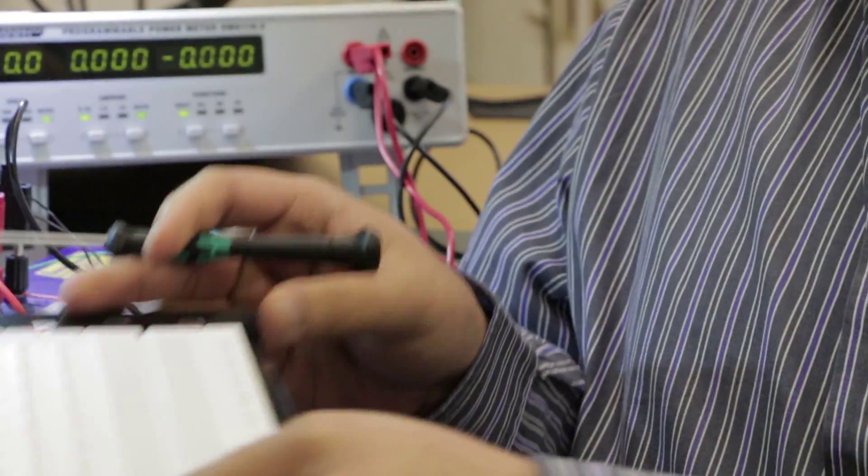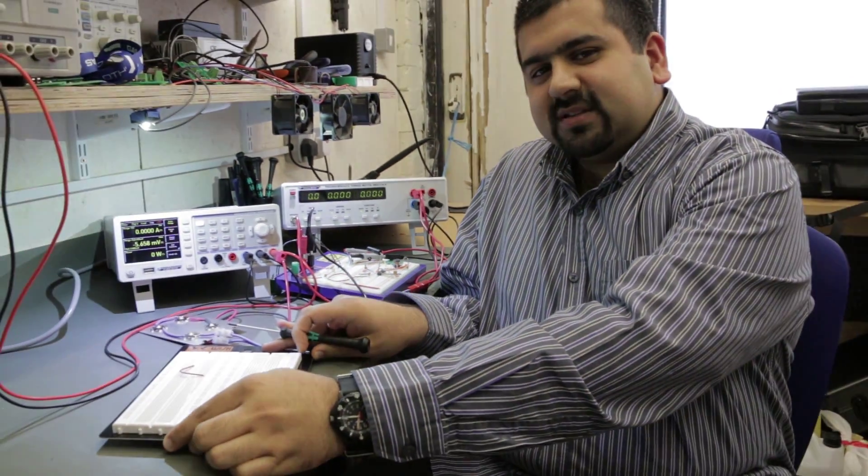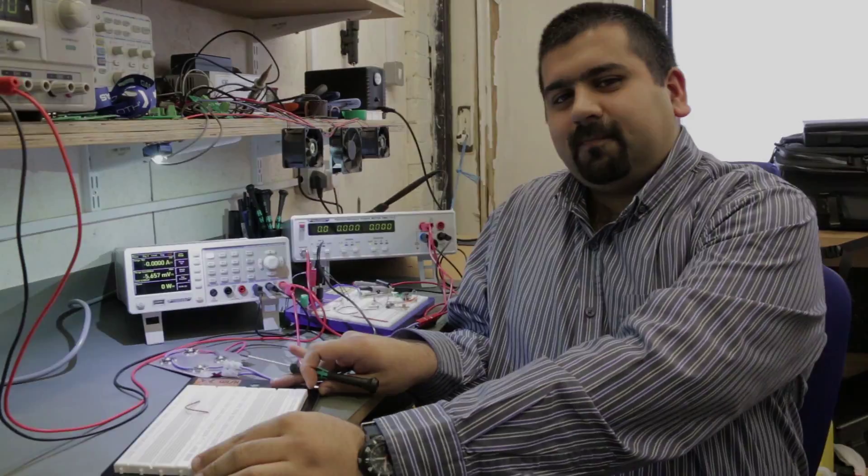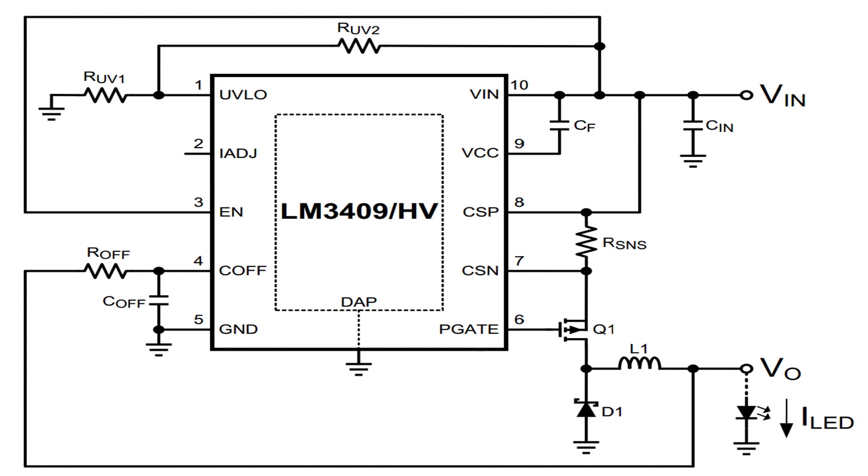If you want more information on this have a look at Dave Jones's EEVblog video. This is a schematic of the circuit that we have built on the breadboard. It is a typical application shown in the datasheet for the LM3409 to which we have added an output capacitor.